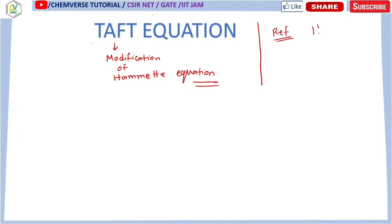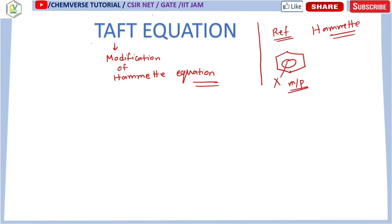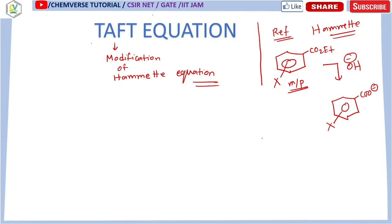What was the reference reaction which was taken by Hammett to give its relationship? This was the aromatic ester with meta or para substitution. So, aromatic ester — and what he did was a base-catalyzed hydrolysis. He studied this, and this base-catalyzed hydrolysis produces the product. So this is the reference reaction for the Hammett equation.